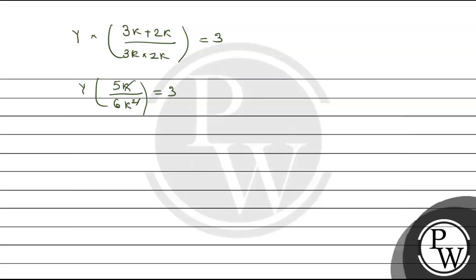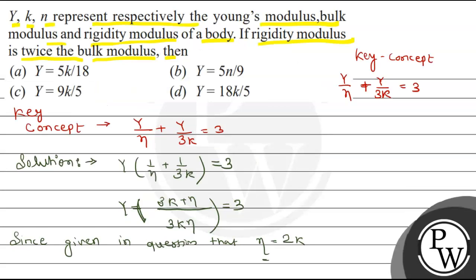One K will cancel. So Y equals 6K / (5 × 3), which equals 18K/5. Therefore our answer is Y equals 18K upon 5, and Option D is the right option.